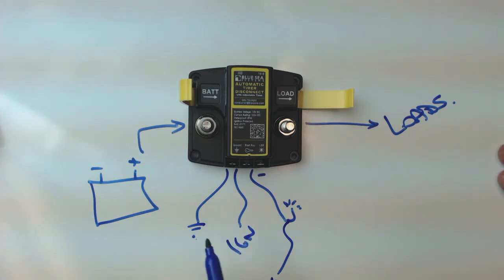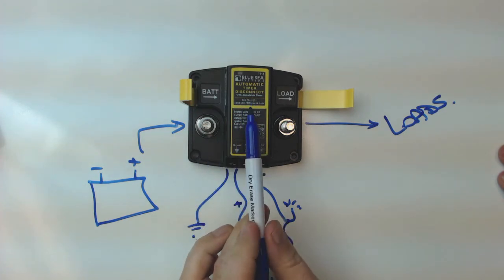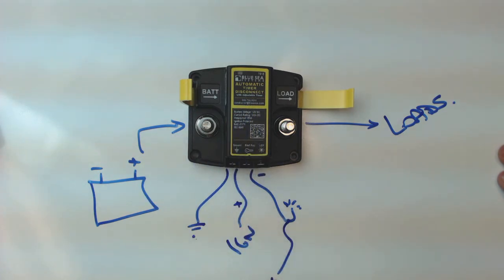So when there is 12 volts on the ignition line, then the solenoid inside here will close, and the power flows normally through to the loads, and the loads are all happy and doing what they do.